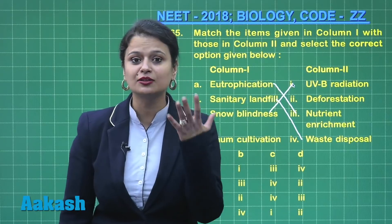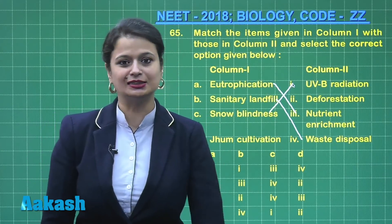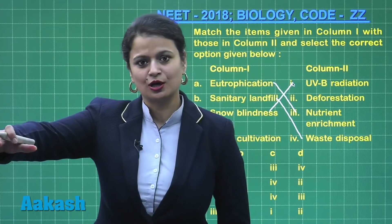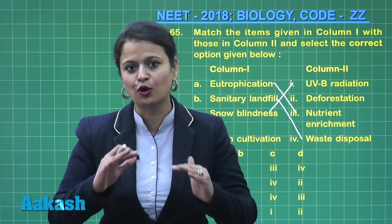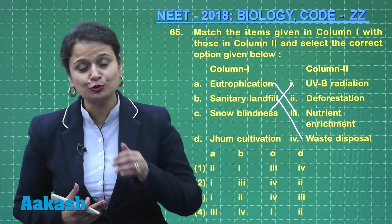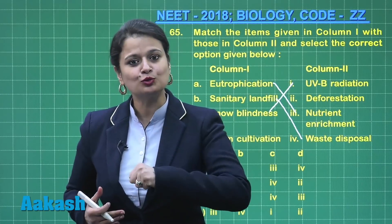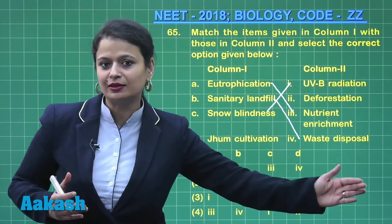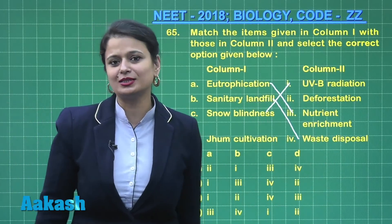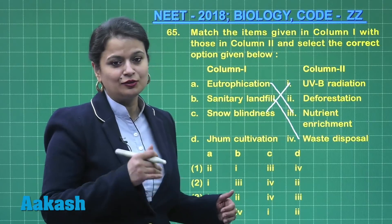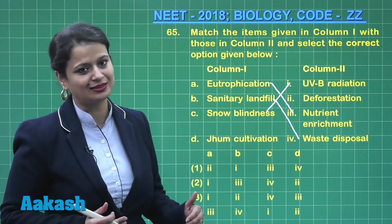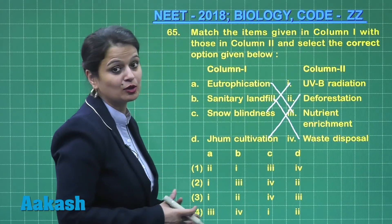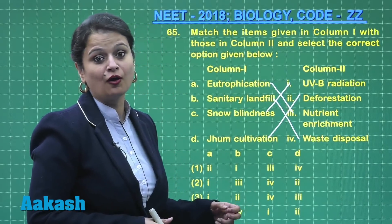Jhum cultivation, also known as shifting cultivation or slash-and-burn cultivation — a forest land is used for growing agricultural crops for a few years, then that area is left to replenish its nutrients so it can rebound, and then cultivation moves to another area. Nowadays, this recovery period is not given, causing the nutrient content of the area to decrease, leading to deforestation.